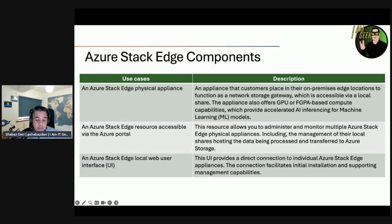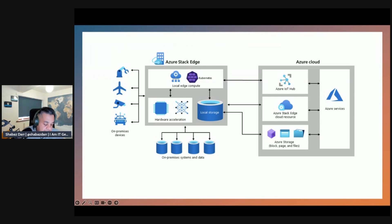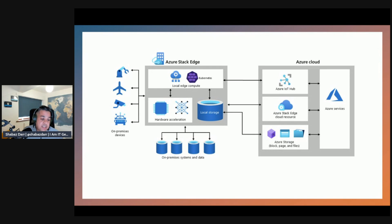Looking at a diagram to explain the overall layout: on the left-hand side we have on-premises components and devices, such as IoT devices and machine learning devices. Within the Azure Stack Edge appliance we have Kubernetes, local edge components, hardware acceleration, and local storage — all still on-premises — integrating with on-premises systems and data. On the cloud side we have Azure IoT Hub and Azure Stack Edge cloud resources including block, page, and file storage, which then integrate with broader Azure services.